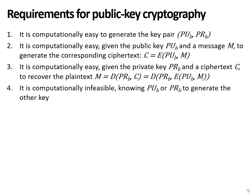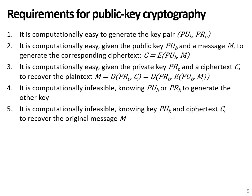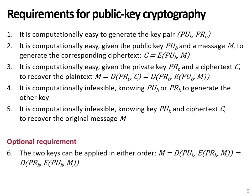Fourth, it should be computationally infeasible, knowing one of the keys, to generate the other. This prevents an attacker using a publicly shared public key from being able to retrieve the private key, which would allow them to decrypt a message. It should also be infeasible, knowing the public key and the ciphertext, to recover the original message — obviously for purposes of secrecy when used for confidentiality. Finally, there is a sixth optional requirement: the two keys can be applied in either order. If this is the case, then each key can be used either for encryption or decryption, which makes the algorithm more flexible and supports multiple applications.